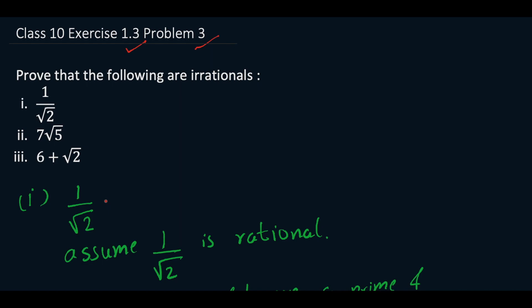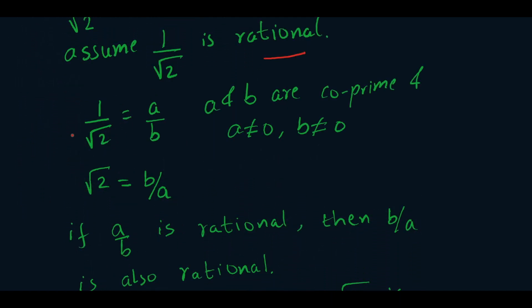We will start with 1 by root 2. We assume that 1 by root 2 is rational, so we can write 1 by root 2 as a by b, where a and b are co-prime and neither a is 0 nor b is 0. Inverting this, b will be equal to root 2 times a, so b by a will be equal to root 2.